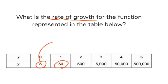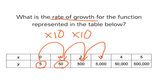5 to 50, it looks like we multiply by 10. To get from 50 to 500, we multiply again by 10. To get from 500 to 5,000, we multiply by 10 and so on.